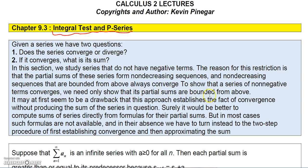At first it may seem to be a drawback because this approach establishes convergence but doesn't actually give us the sum of the series. It might be better to have the sums, but in most cases it can't be done. So since we don't have the sums, we must first establish whether the series is convergent, and then we can try to approximate the sum if possible.